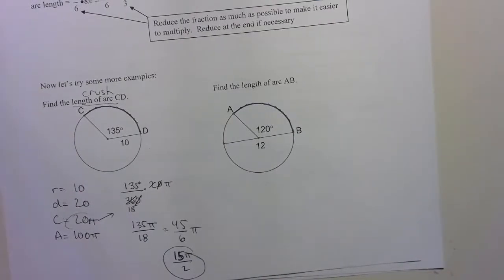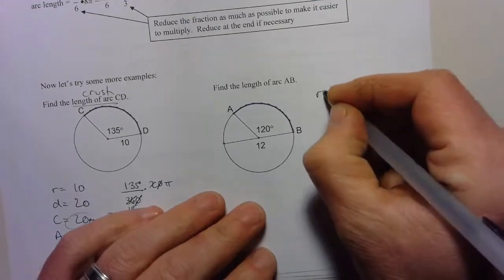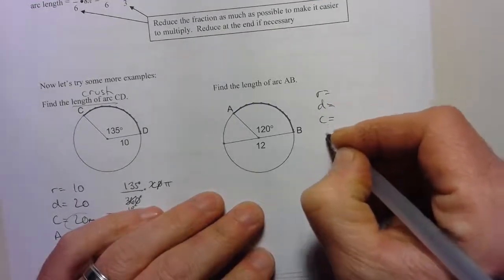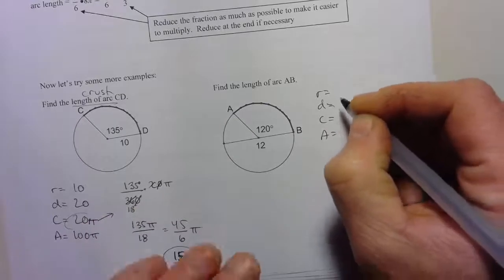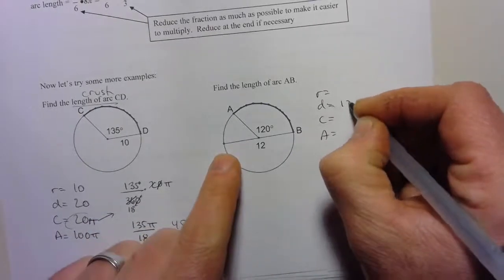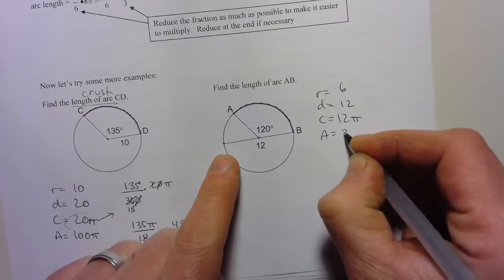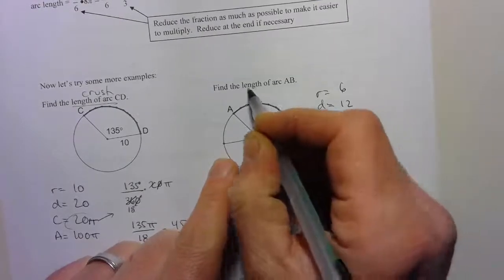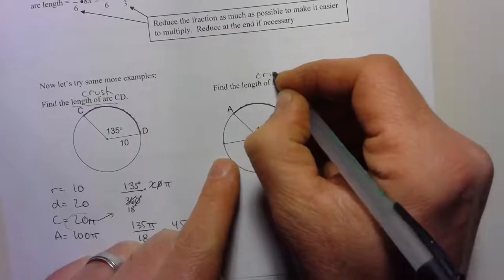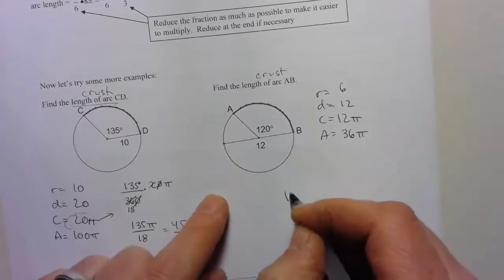Let's take a look at this problem here. Find the length of arc AB. So, radius, diameter, circumference, area. Always do it, step one, always write that out. This is a diameter of 12. I'm doing the length of the arc. Length of the arc is the crust, so I'm going to use the circumference.